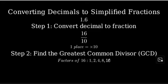Let's list out the factors of 16: 1, 2, 4, 8, and 16. And the factors of 10 are 1, 2, 5, and 10. Looking at both lists, we can see that 2 is the largest number that appears in both lists. Therefore, 2 is our greatest common divisor.